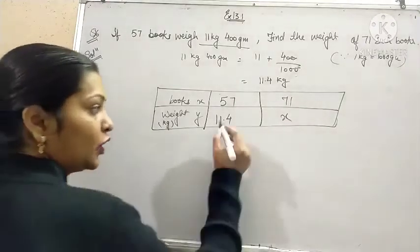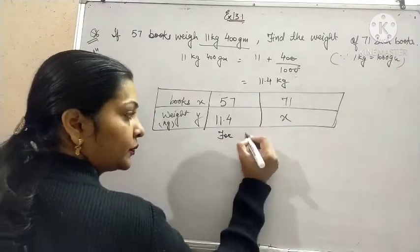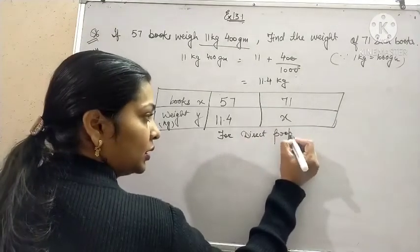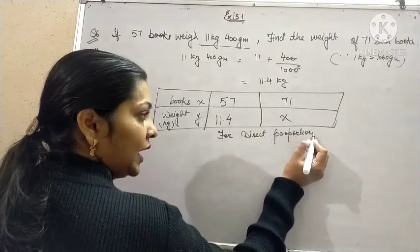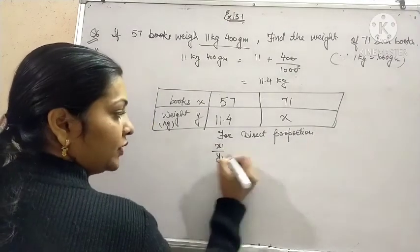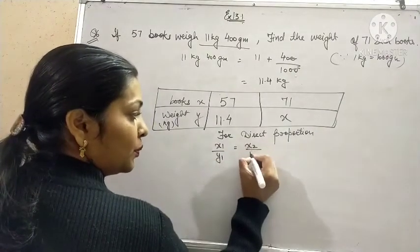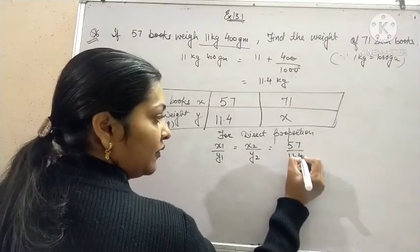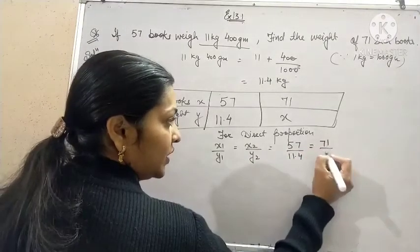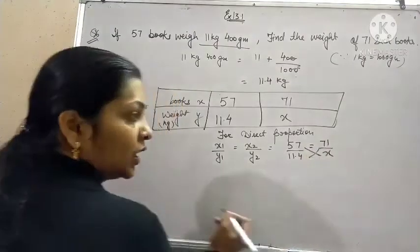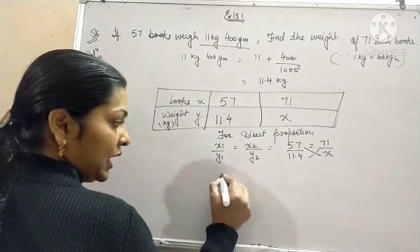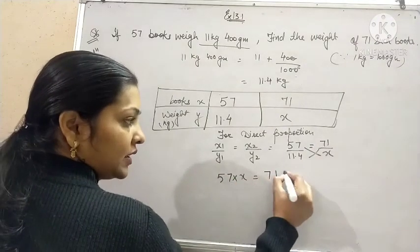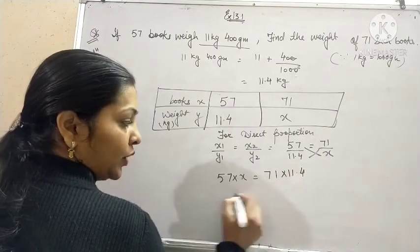For direct proportion we have x1 upon y1 is equal to x2 upon y2. So 57 upon 11.4 is equal to 71 upon x. Cross multiply it. You will have 57 into x is equal to 71 into 11.4.